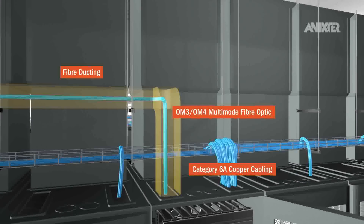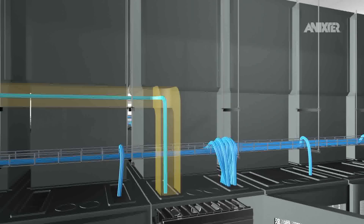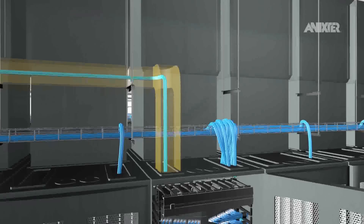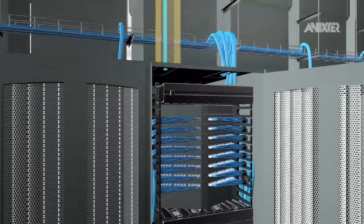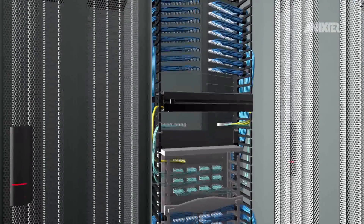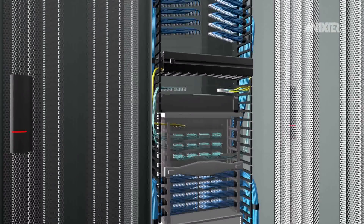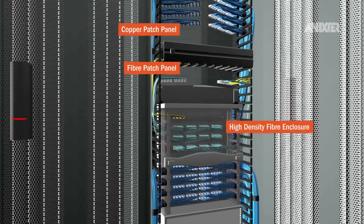between the horizontal distribution area and the equipment distribution area. Fibre in the distribution areas offers flexibility and provides high density connectivity through the use of multi-fibre plug-and-play modules and cable assemblies.